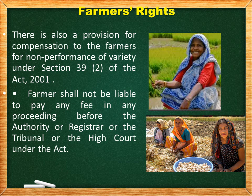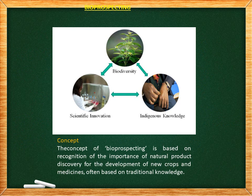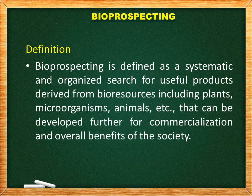Next, bioprospecting. The concept of bioprospecting is based on the recognition of the importance of natural product discovery for the development of new crops and medicines, often based on traditional knowledge. It is also useful in many fields like agriculture, bioremediation, nanotechnology, and pharmaceuticals. Bioprospecting is defined as a systematic and organized search for useful products derived from bio-resources, including plants, microorganisms, and animals, that can be developed for commercialization and the overall benefit of society.